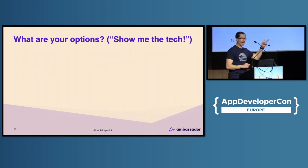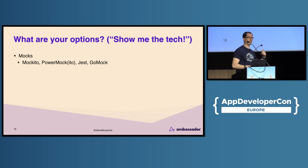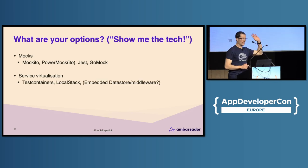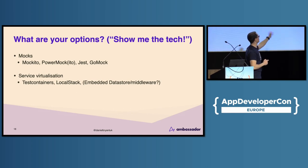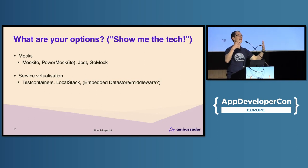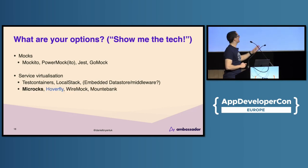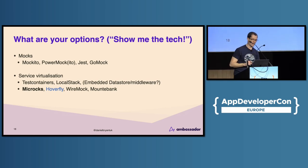If you want the tech, here are your options. For mocks: Mockito, PowerMock, Jest for JavaScript, GoMock for Go. For service virtualization tooling: I love TestContainers, LocalStack — I was a big fan of that when it came out of Atlassian for embedding AWS components in your test runners. I've also used H2, HSQL, Embedded Kafka when I want to simulate something rather than run the real middleware or real data store in my tests. There's also Microx, Hoverfly, WireMock, and MountieBank for more network-level virtualization tooling.